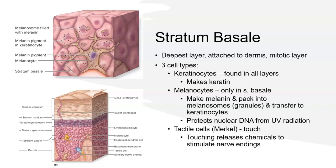The third cell type are the tactile cells, also called Merkel cells. These are relatively few in number but scattered among the cells in the stratum basale. They are sensitive to touch and when stimulated, release chemicals that activate sensory nerve endings. They are more common in areas with higher sensitivity, such as your fingertips.